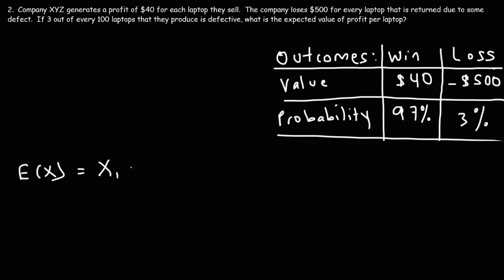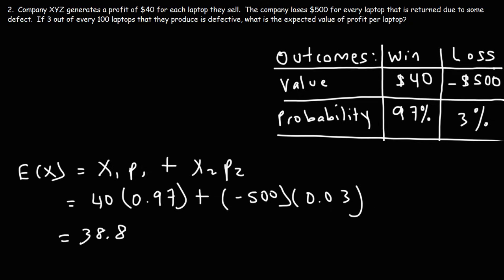So using the same formula, X1P1 plus X2P2, it's going to be $40 for making a laptop that works properly, times the probability of making a working laptop, which is 0.97, and then plus X2, which is negative $500, times the probability of making a defective laptop, which is 0.03. So 40 times 0.97, that is 38.8. And negative 500 times 0.03 is negative 15. Subtracting the two numbers, we get 23.8. So the expected value of profit per laptop is $23.80.